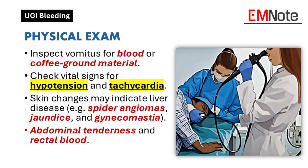The most reliable diagnostic clue in the emergency department is direct inspection of the vomitus. Vital signs often reveal hypotension or tachycardia, and more subtle indicators include reduced pulse pressure or tachypnea. Cool, clammy skin may signal shock, while signs like spider angiomas, jaundice, and gynecomastia suggest underlying liver disease. A complete abdominal and rectal examination is essential to identify tenderness, masses, ascites, or the presence and nature of blood.